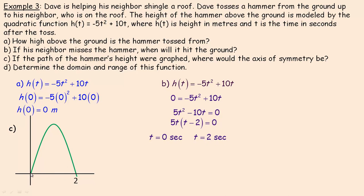The axis of symmetry is right in the middle between the two roots at 0 and 2. It's easy to see that's at t = 1. Mathematically, you can average the roots: (0 + 2) / 2 = 1. So the axis of symmetry is at t = 1, which is also the x-coordinate of the vertex — useful for finding the domain and range.